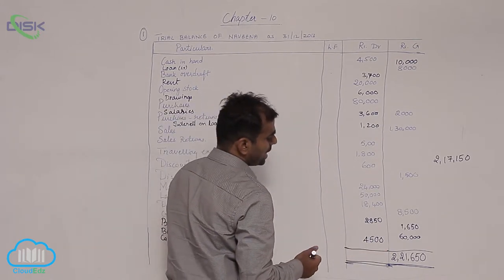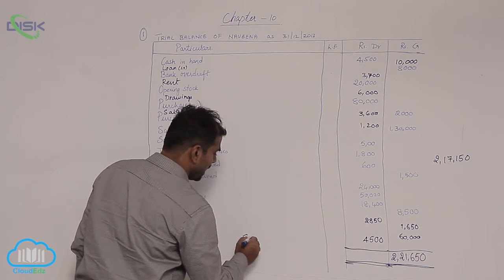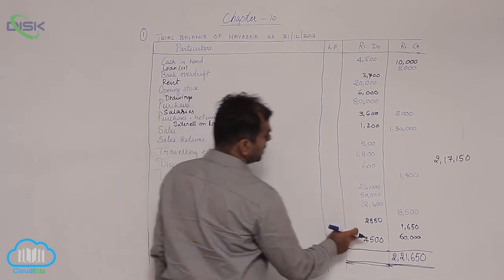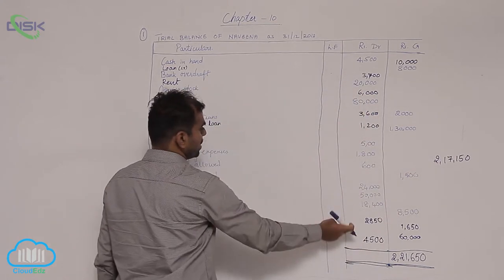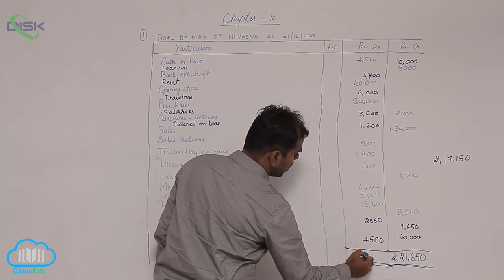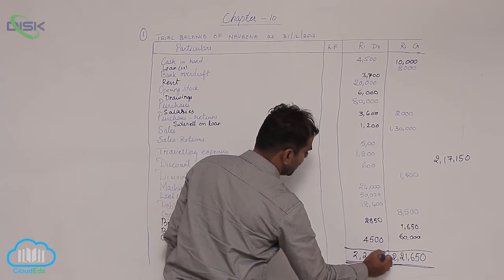We will write a suspense account. When we are adding this 4,500 to this 2,17,150 which is the total of existing debit balances, we will be getting 2,21,650.